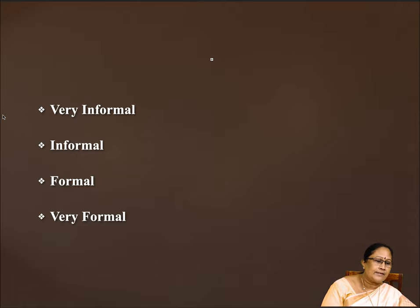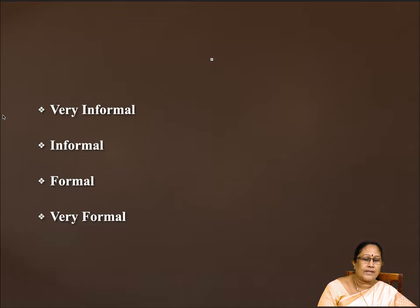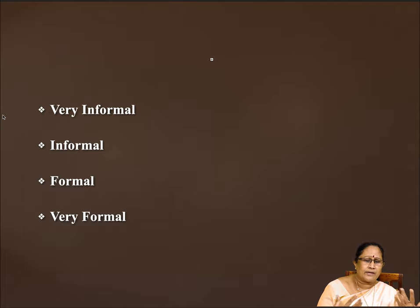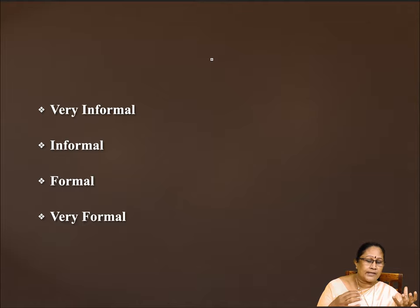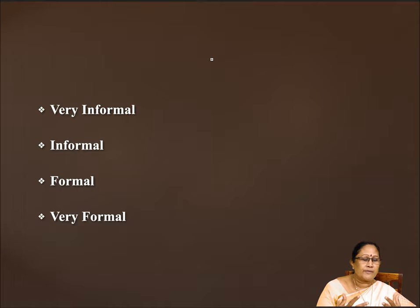Number one is very informal. When two intimate or bosom friends speak with each other, they will be very informal. Users of English use very informal language in intimate situations — very close friends, childhood friends. That is where they use colloquial expressions, slangs, and code-mixed or code-switched words, mixing Tamil and English, Hindi and English, or Malayalam and English. They are very comfortable with that in very informal situations.